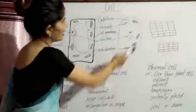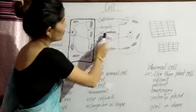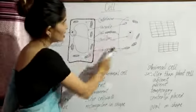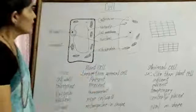So, animal cell has cytoplasm, vacuole, cell membrane, nucleus, and mitochondria.